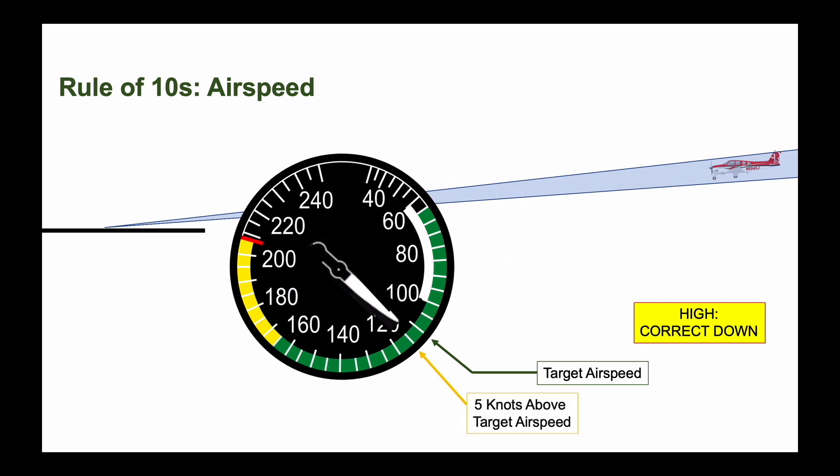If you're high and need to correct down, lower the nose only so much that the airspeed remains no more than 5 knots faster than your target airspeed.